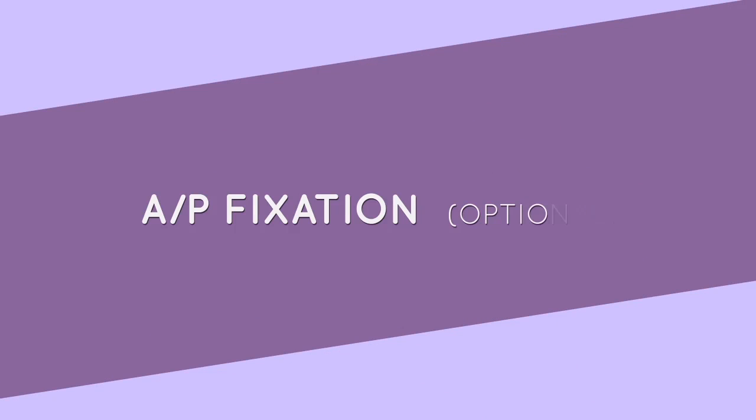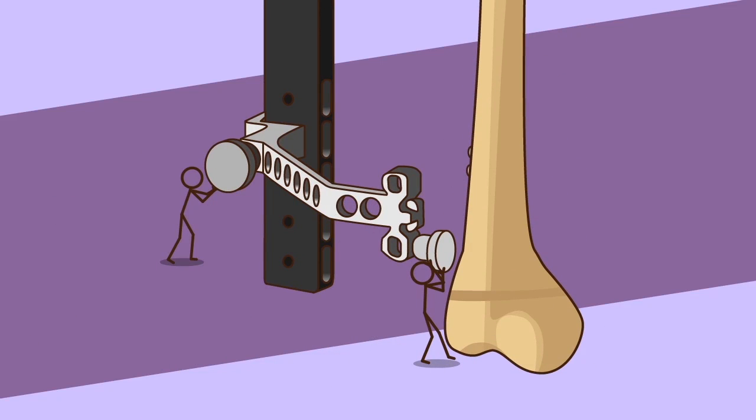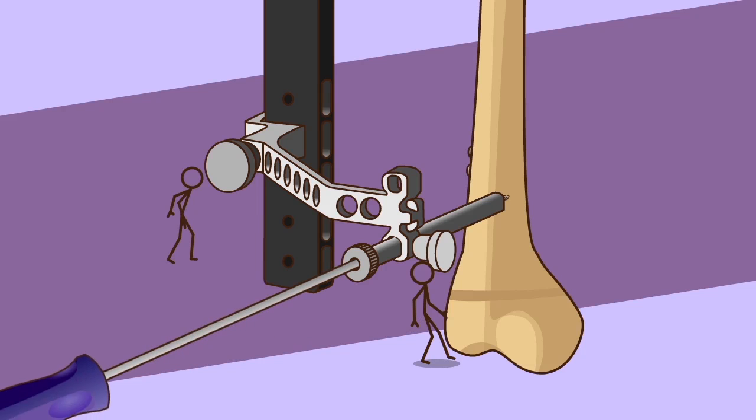AP fixation optional: using an AP screw is recommended to improve rotational stability of the implant assembly. For AP nail locking, mount the AP adapter onto the distal attachment using the locking knob. Insert the cortical screw sleeve into the adapter and make a stab incision to allow insertion of the sleeve up to the cortex. Lock the sleeve in position. Using the adequate cortical screw drill, drill to the fore cortex and note the corresponding screw length on the drill. Finally, insert the cortical screw using the multi-purpose screwdriver.